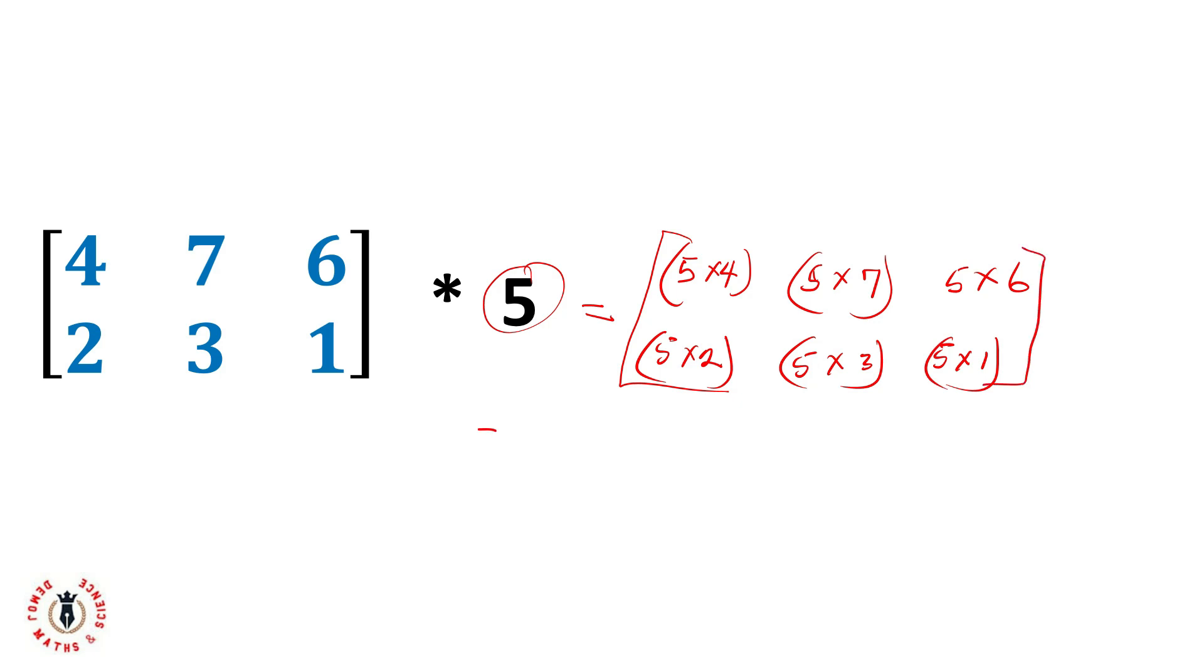Now I can conclude it. 5 times 4 will be 20, 5 times 7 is 35, 5 times 6 is 30, 5 times 2 is 10, 5 times 3 is 15, and 5 times 1 is 5. Here is my multiplication.